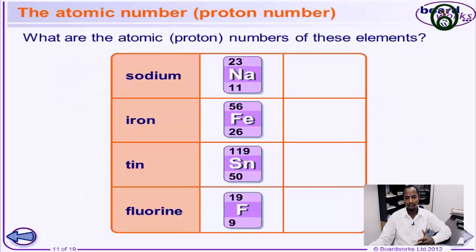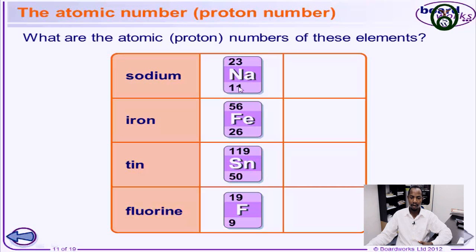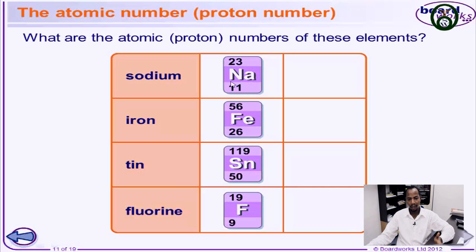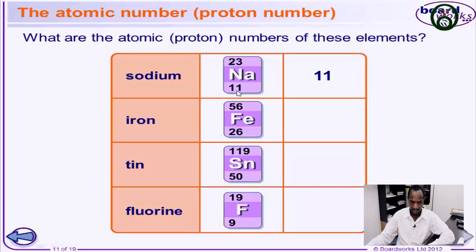The atomic numbers are based on the number of protons of different elements. When we write an element or an atom, the number on the bottom left side is the number of protons, and the one on top is the mass number. The one on the bottom left side of the atom is the number of protons and it represents the atomic number of the element, because the number of protons equals the atomic number.